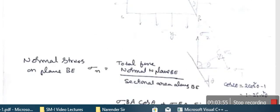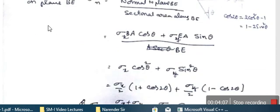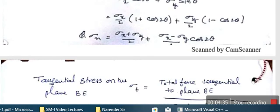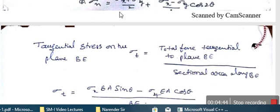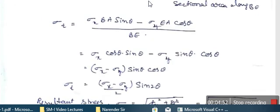Similarly, a member is subjected to like principal stresses — two mutually perpendicular stresses sigma_x and sigma_y — as shown in this figure. The normal stress on the oblique plane BE is the total force normal to the plane divided by the area of the oblique plane BE. Taking sigma_x acting on plane BE resolved into vertical and horizontal parts: sigma_x times BA cos theta plus sigma_y times ea sin theta, divided by BE. By simplification, sigma_n equals (sigma_x + sigma_y)/2 plus (sigma_x − sigma_y)/2 times cos 2 theta.